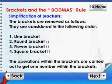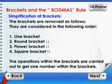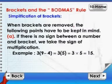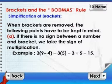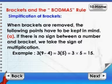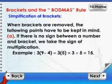The operations within the brackets are carried out to get one number within the brackets. When brackets are removed, the following points have to be kept in mind. Point A: if there is no sign between a number and a bracket, we take the sign of multiplication.